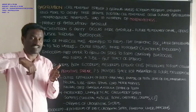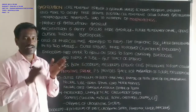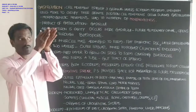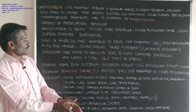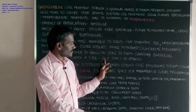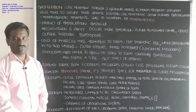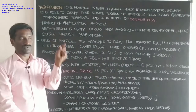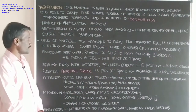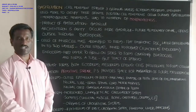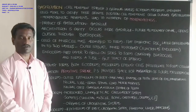Endoderm covers the entire blastocoel and forms a tube-like arrangement. This tube-like structure is called the gut tract — the alimentary canal or food tube of the embryo. The endoderm covers the blastocoel and forms the gut tract of the embryo.